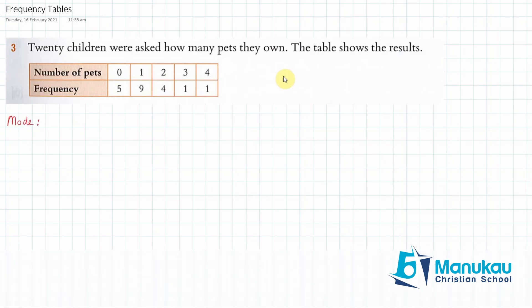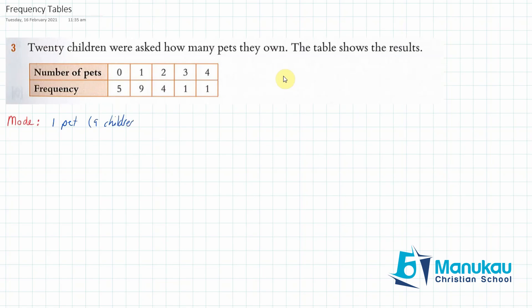Let's look at the frequency table and see what it means. Number of pets — we've got 20 children and we asked them how many pets they had. Five children said they had no pets, nine children had one pet, four had two pets, one had three pets, and one had four pets. So in this case the mode is going to be one pet, because nine children had one pet. So the mode is one pet.